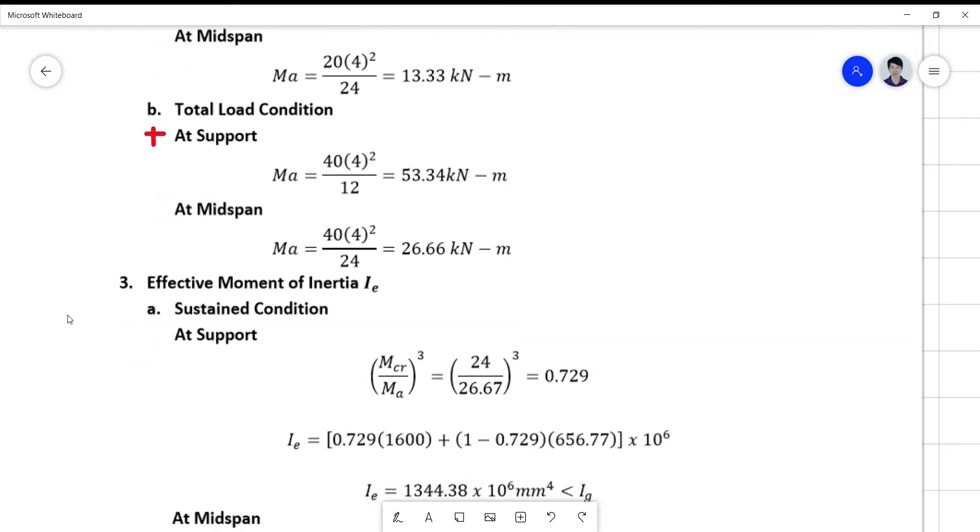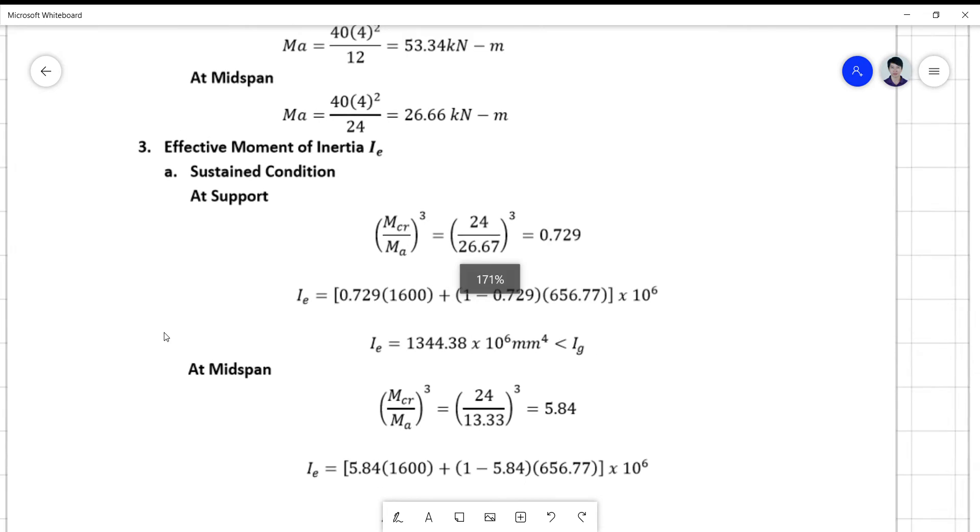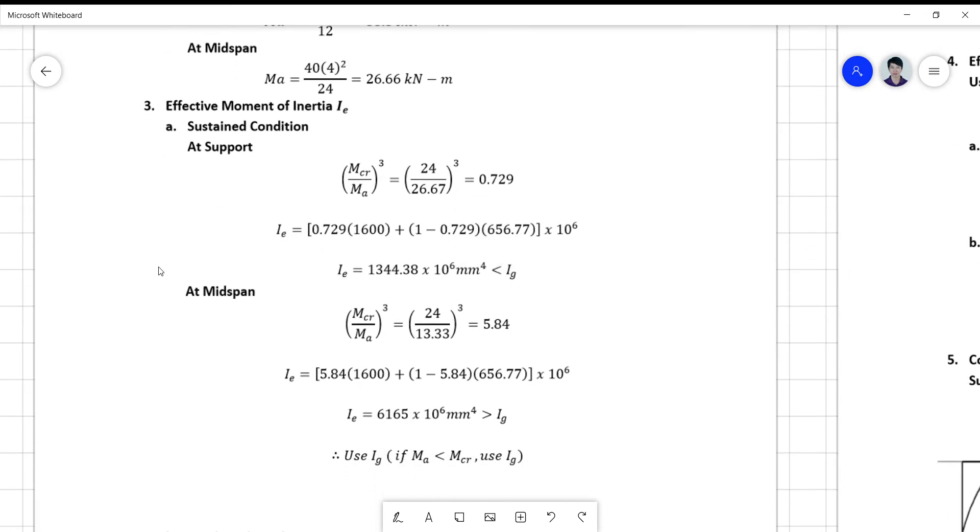For your effective moment of inertia, we have again to solve the values at the sustained and total load condition. But in the sustained and total load condition this time, there's again an additional moment of inertia effective at the support.